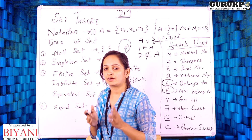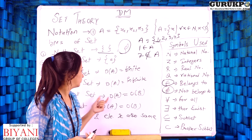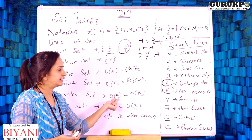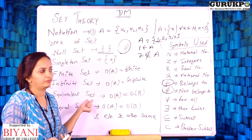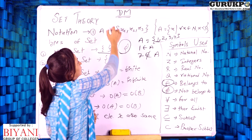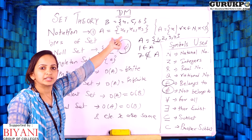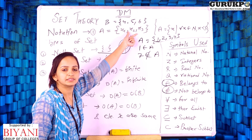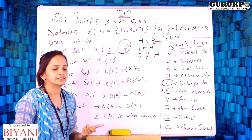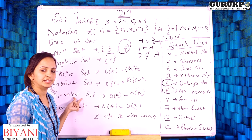The next type of set is the equivalent set. Equivalent set means: if we have two sets and the order of A equals the order of B, then set A and set B are called equivalent sets. For example, if set A = {x1, x2, x3} and set B = {4, 5, 6}, both sets have 3 elements, so they are equivalent sets.